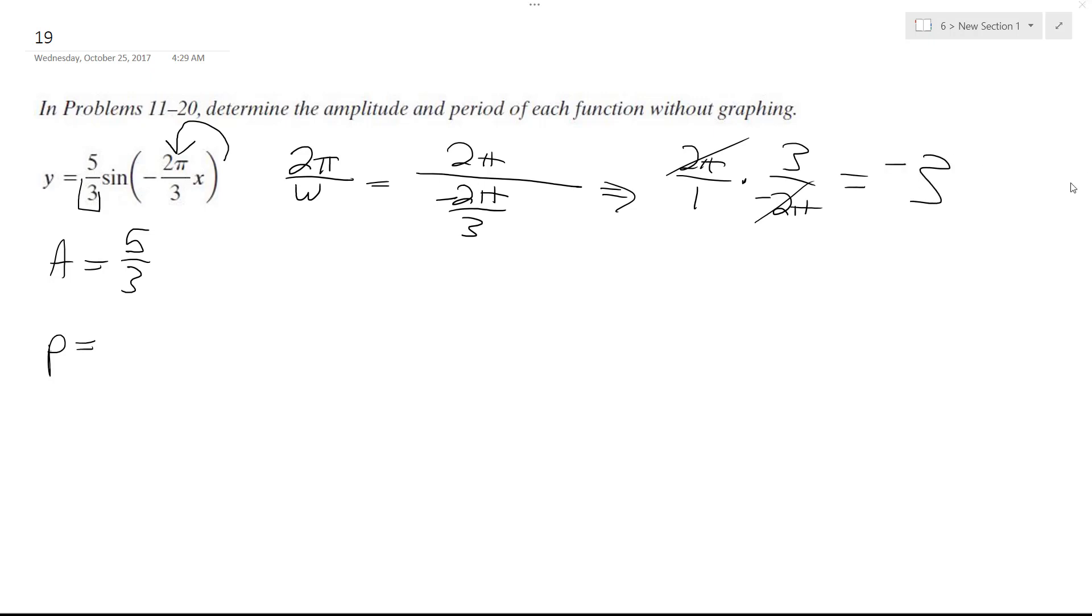Actually, because it's just the period, you don't have to worry about the negative. If you're graphing it that does matter, but for just the period it's 3. So amplitude is 5 over 3 and the period cycles every 3 units.